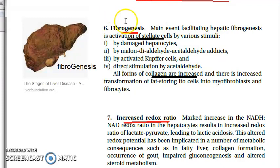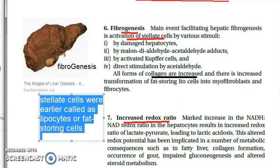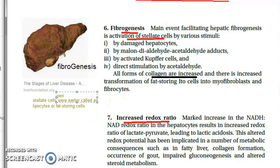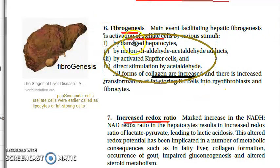Sixth point: fibrogenesis. Hepatic stellate cells get activated, causing fibrogenesis. These stellate cells were formerly called lipocytes or fat-storing cells; they are also known as perisinusoidal cells. Once activated, they facilitate fibrogenesis. This activation is driven by the MA adduct, by activated Kupffer cells (the liver's macrophages), and by direct stimulation by acetaldehyde. All forms of collagen are increased as a result.